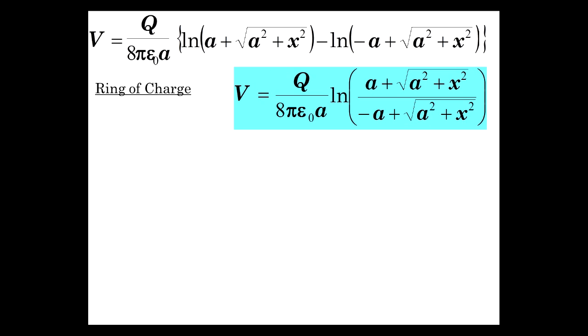So this is our result. It's not very friendly, necessarily. Certainly don't memorize that. But nevertheless, that's the potential from the finite line of charge. And now let's do a ring of charge.